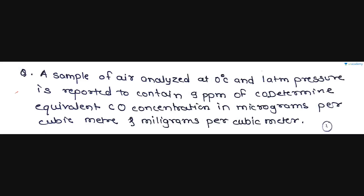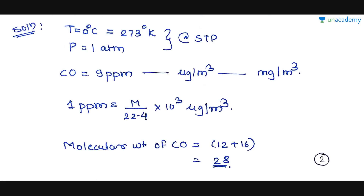The first example: a sample of air analyzed at 0°C and 1 atmosphere pressure is reported to contain 9 ppm of CO. Determine the equivalent CO concentration in micrograms per meter cube and milligrams per cubic meter. They have given the CO concentration as 9 ppm, the temperature is 0°C (which is 273 Kelvin), and P is 1 atmosphere — this is standard temperature and pressure (STP).